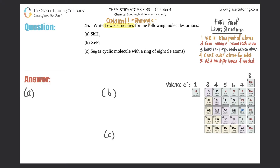It's called the foolproof Lewis structure method — very simple. We've done many problems like this already, so if you haven't done the easier ones go back first. But if you want to start here, that's fine too. For part A, we need to find the Lewis structure for SbH₃.